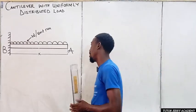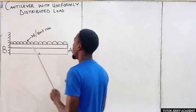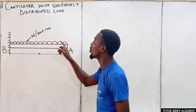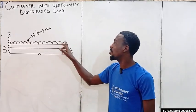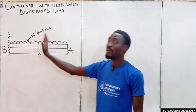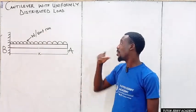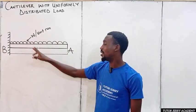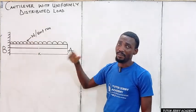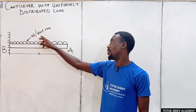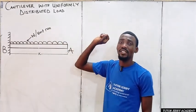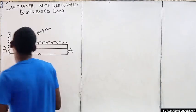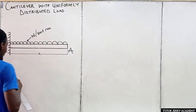The first thing we are going to do is convert this uniform distributed load to a point load. To do that, we are going to say W multiplied by S, which gives us WS. And this WS is going to act at the center.